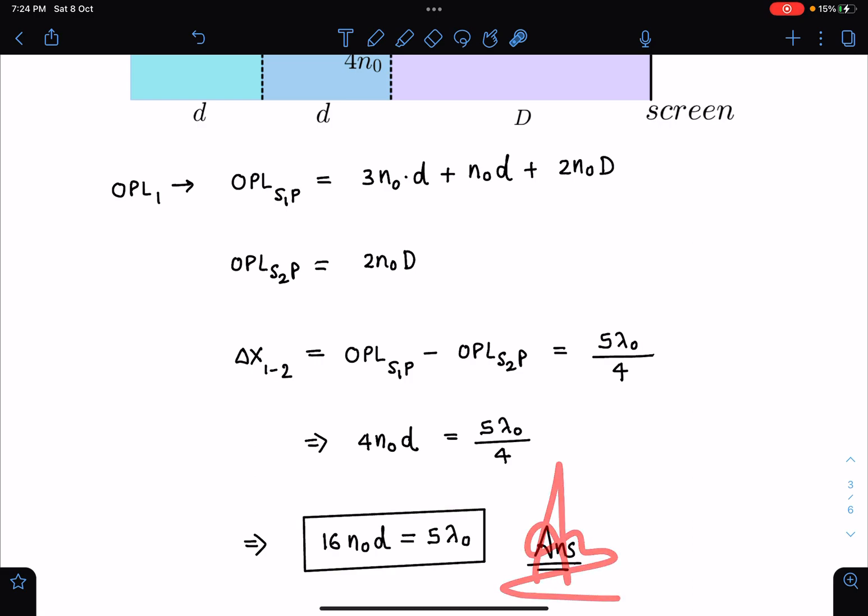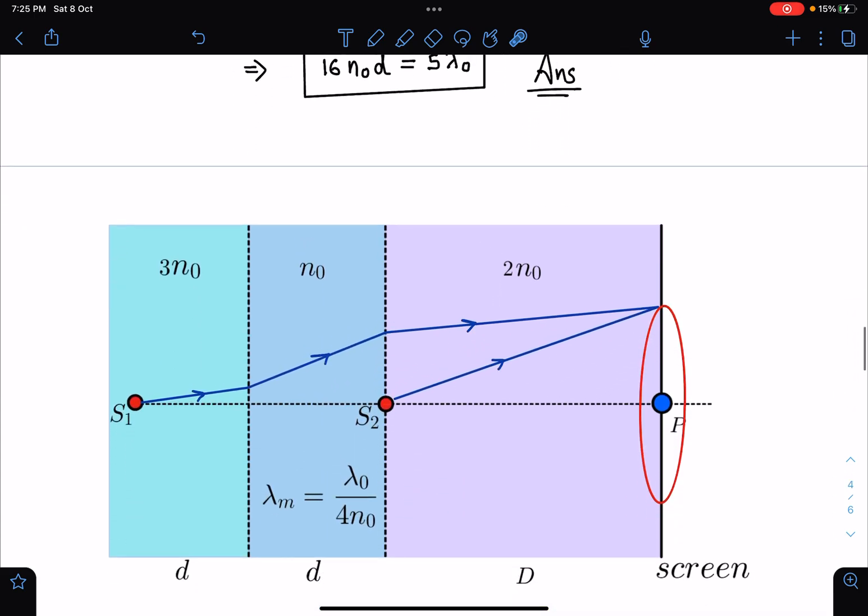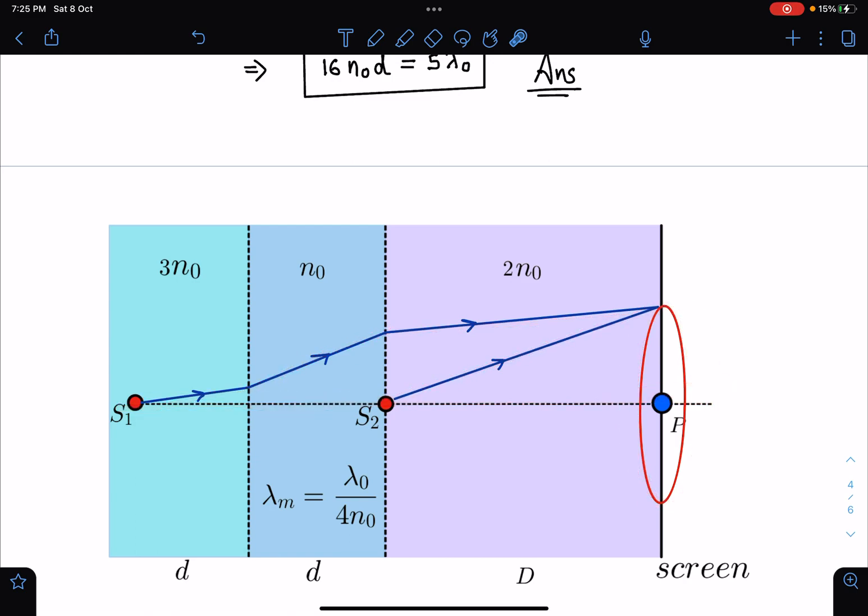And shape of fringes, you can see if I take light rays then refraction, refraction, and finally light ray will reach here and this will be symmetrical throughout this because sources are perpendicular to the screen. So it will be symmetrical, so shape of fringes will become circular in this case.